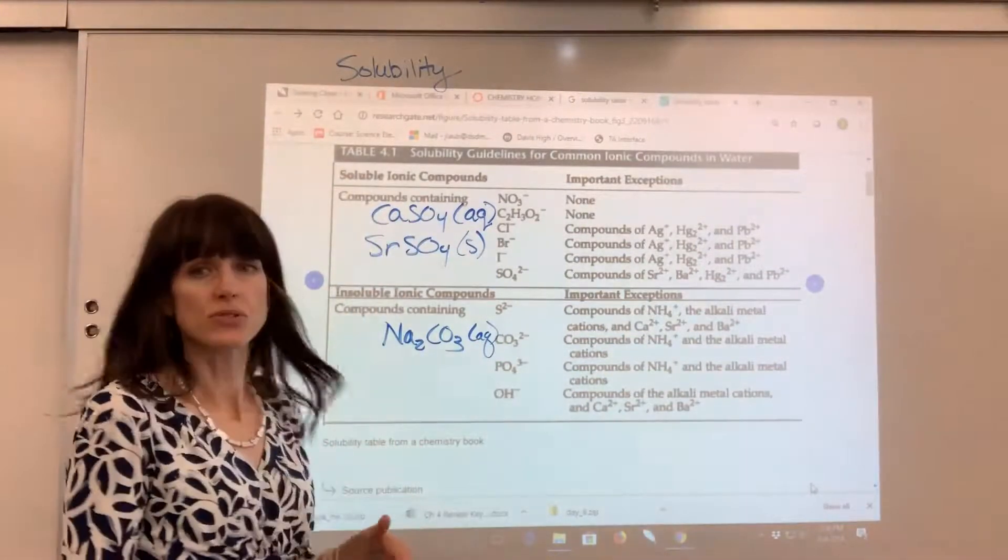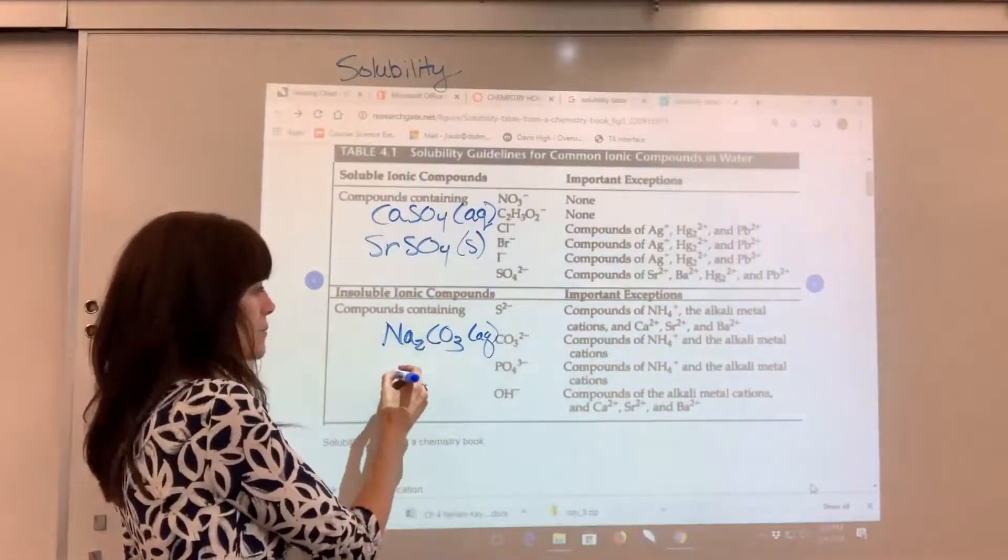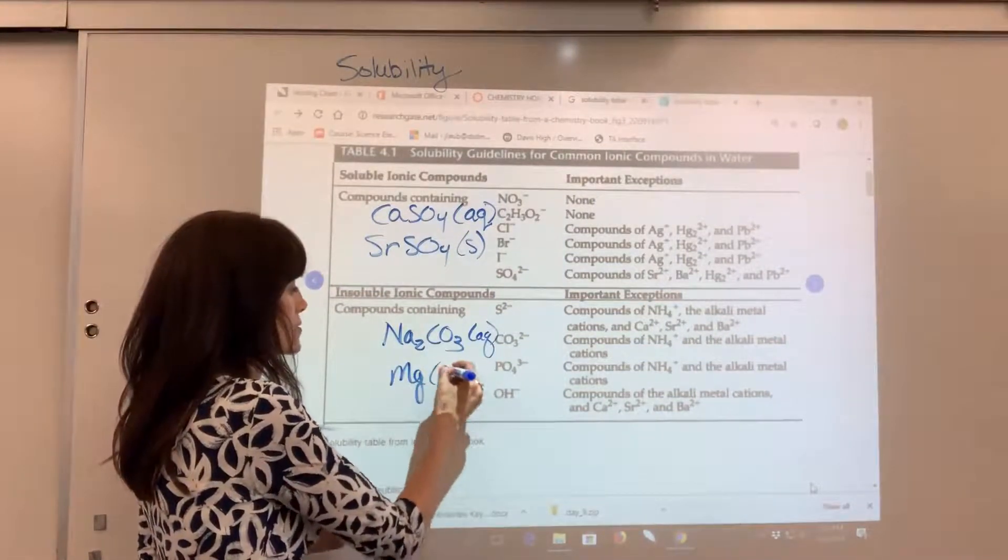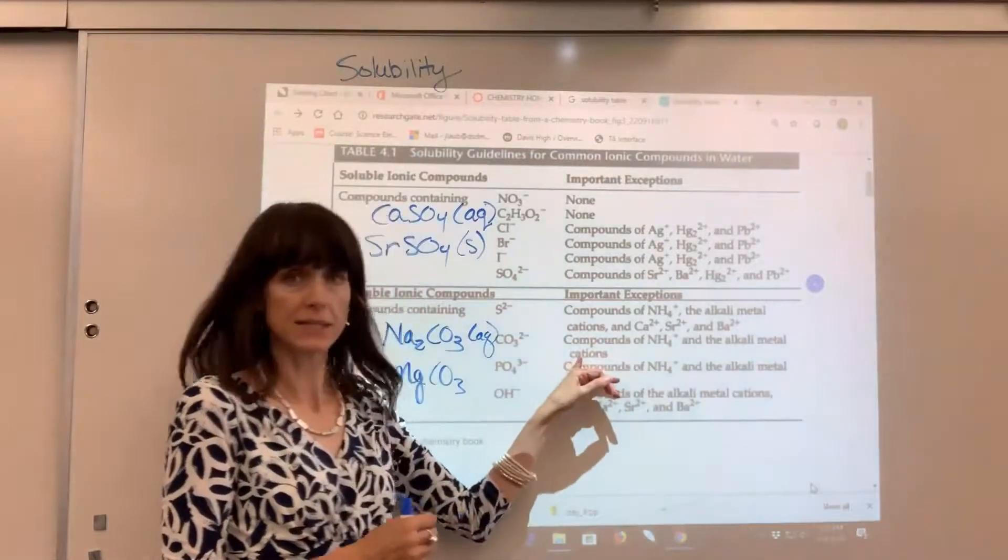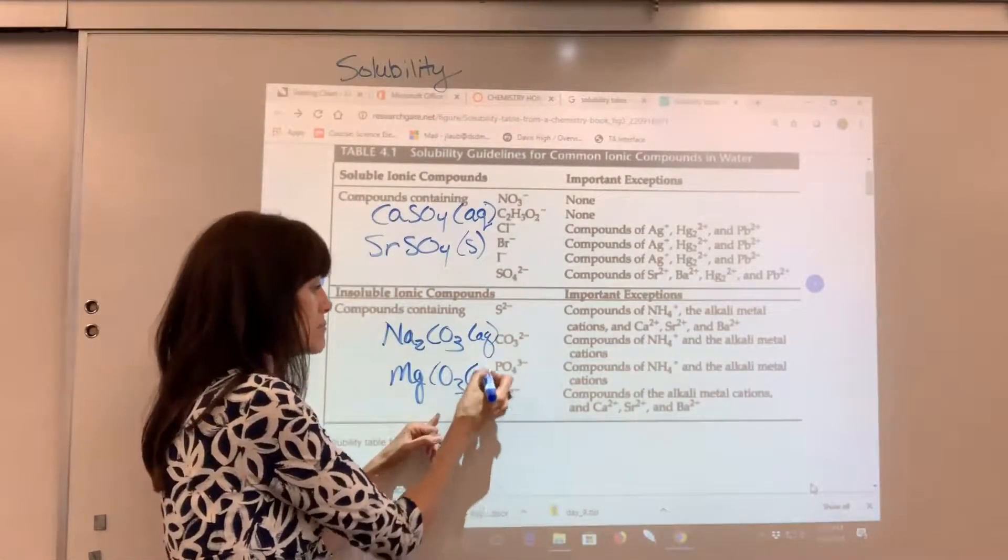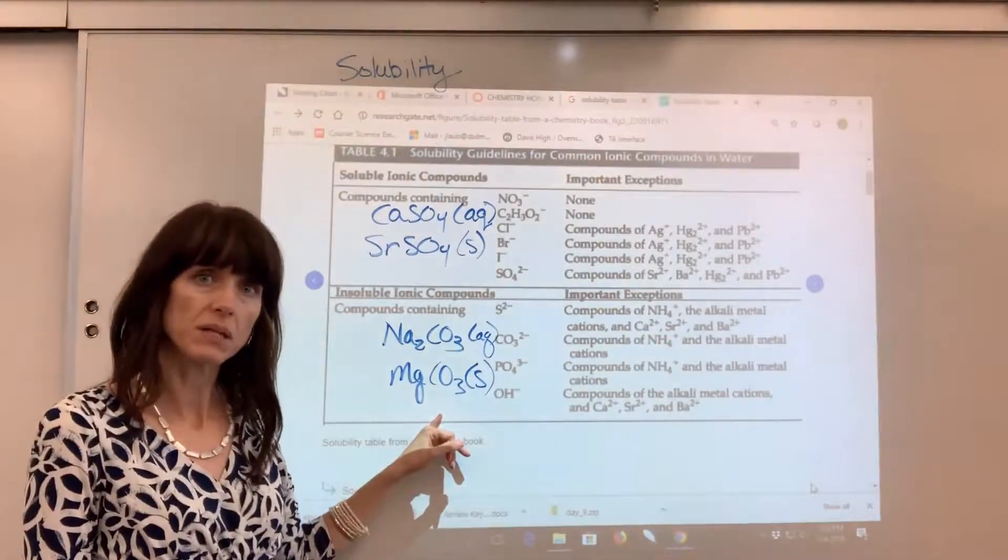For example, let's do a group two. Let's do magnesium. I have a magnesium carbonate. Well, carbonates are insoluble. Magnesium's not on the exception list. So, that means, yep, insoluble. That's going to be a solid.